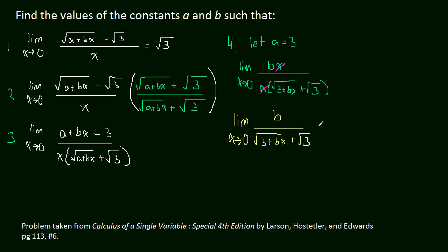And now we know two things. We know that this has to equal radical 3. And we also, at this point, take this 0 and plug it in for X. So what we're left with is we're left with B. Once we plug that limit in, we've evaluated the limit. So we're left with B over radical 3 plus 0, so just radical 3, plus radical 3 is equal to radical 3.